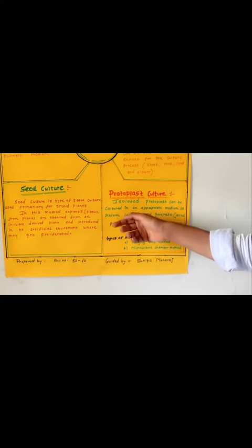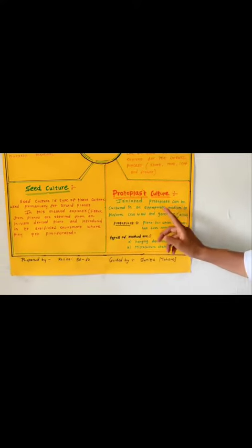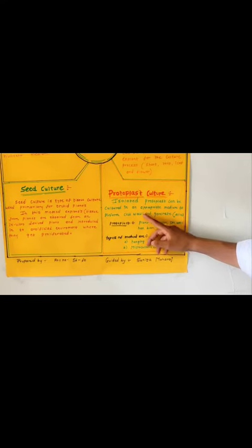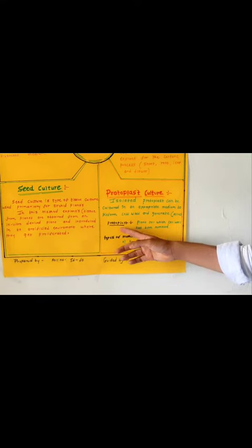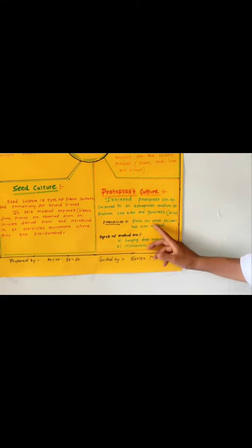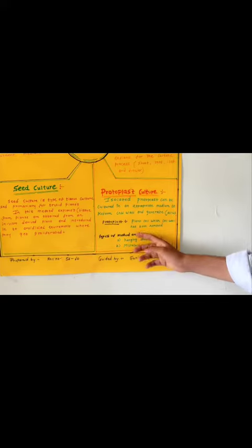Now, protoplast culture. In this method, the isolated protoplast can be cultured in the appropriate medium to reform cell wall and generate the callus. What is protoplast? Protoplast is basically the plant cell from which the cell wall has been removed.